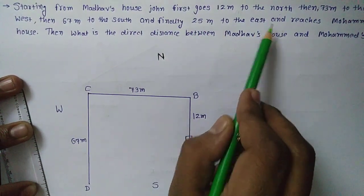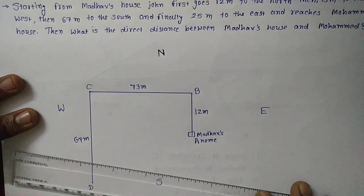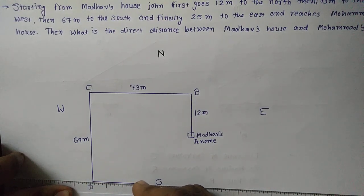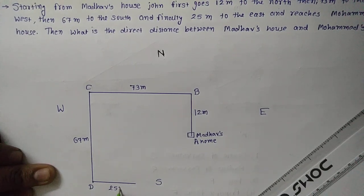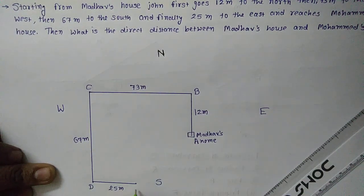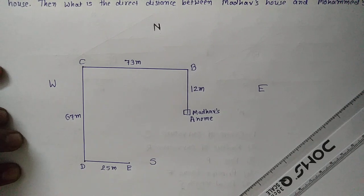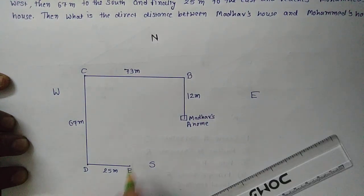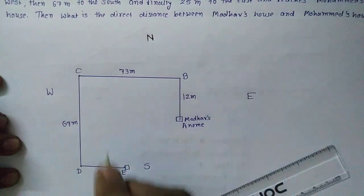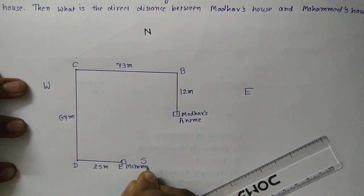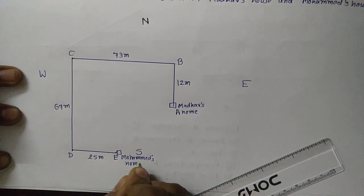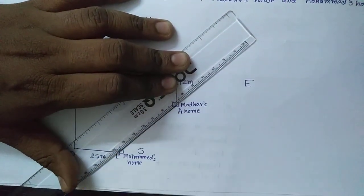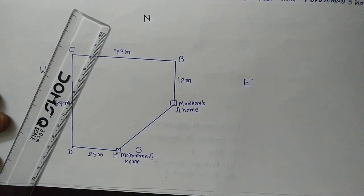And finally 25m to the east. From this point he will go towards the east — in this direction he went 25m. And ultimately he reached point E after 25m. So the points are A, B, C, D, and E. Now, what we have to find out is the direct distance between Madhav's house and Mohammed's house. In this figure, this is Mohammed's house. We need to find out the distance A to E.